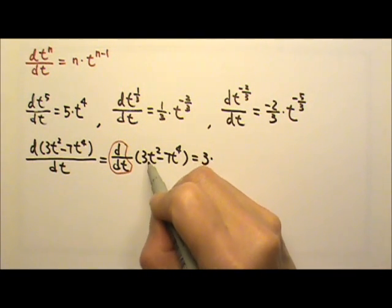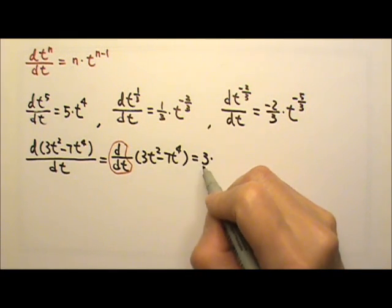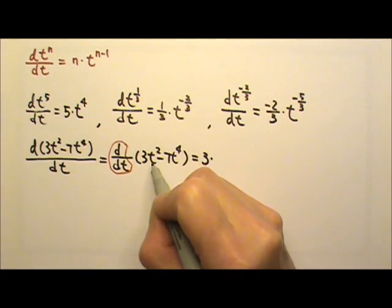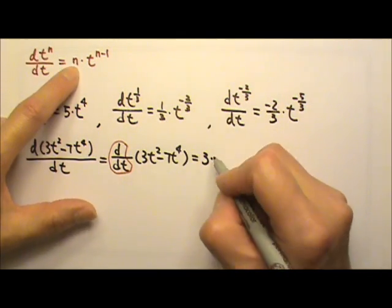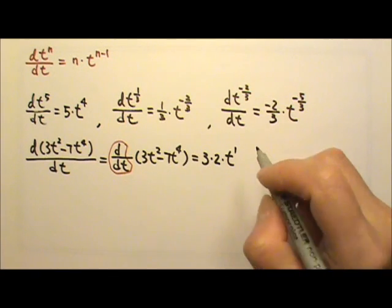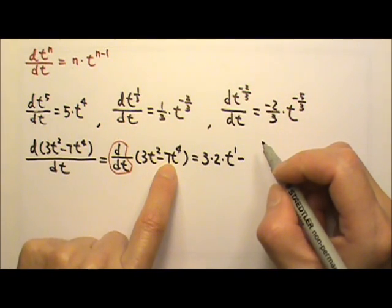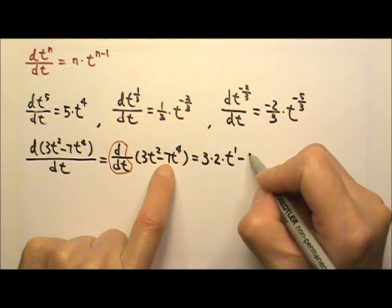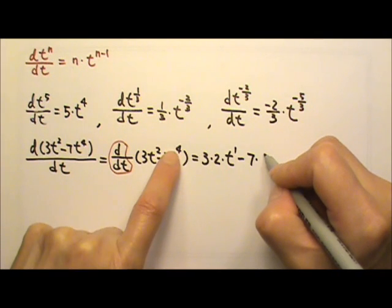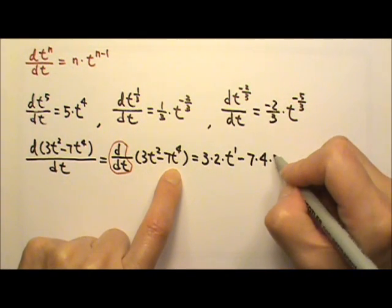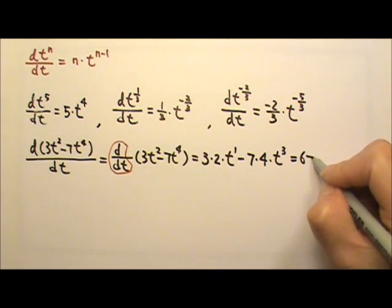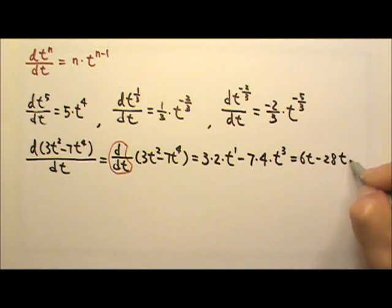Because if we triple t squared, when we take the derivative, we triple the derivative of t squared. So it's 3 times the derivative of t squared — we first bring the exponent down, 2, and then we lose 1 degree of power, 2 minus 1, that gives us 1. Then for the next term, minus 7 — we keep the 7, take derivative of t to the 4th, bring down the exponent 4, and lose 1 degree of power, so we get t to the 3rd. This gives us 6t minus 28t to the 3rd.